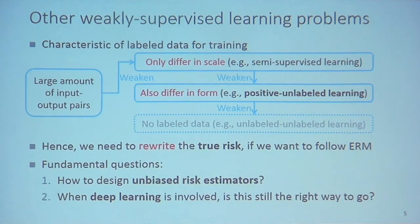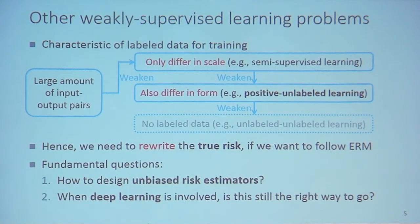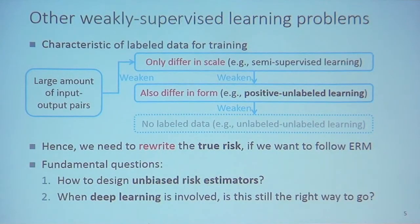In some more difficult learning problems, labeled data also differ in form. For example, in positive-unlabeled (PU) learning, we want to learn a binary classifier only from positive data and unlabeled data — there is no negative data at all. We can also have more difficult problems where there is no labeled data at all. This is called unlabeled-unlabeled learning, where the class prior probabilities of two unlabeled datasets can be different and are known to the learning algorithm.